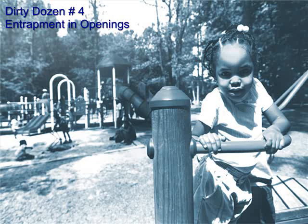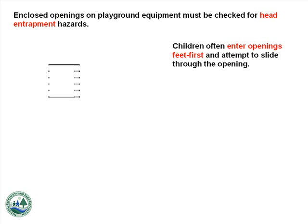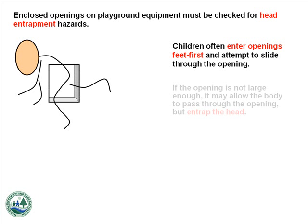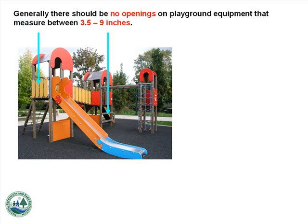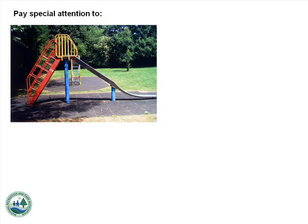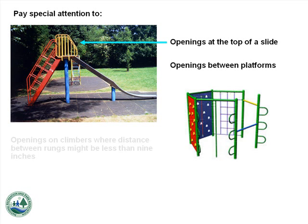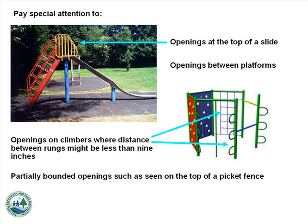Number 4: Entrapment in Openings. Enclosed openings on playground equipment must be checked for head entrapment hazards. Children often enter openings feet first and attempt to slide through. If the opening is not large enough, it may allow the body to pass through but entrap the head. Generally, there should be no openings on playground equipment that measure between 3½ and 9 inches. Pay special attention to openings at the top of a slide, openings between platforms, openings on climbers where distance between rungs might be less than 9 inches, and partially bounded openings such as at the top of a picket fence.